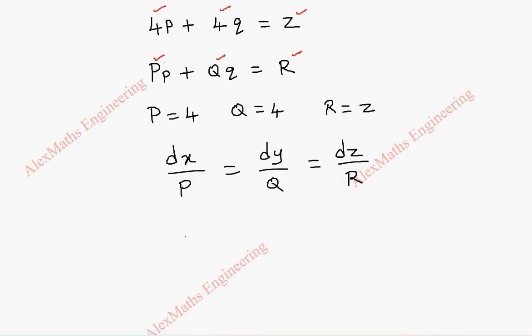By substitution we get dx by 4 equal to dy by 4 equal to dz by z.